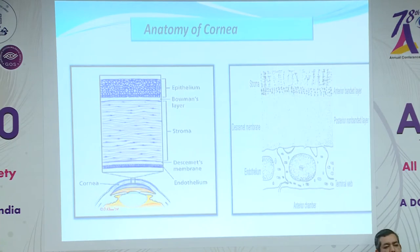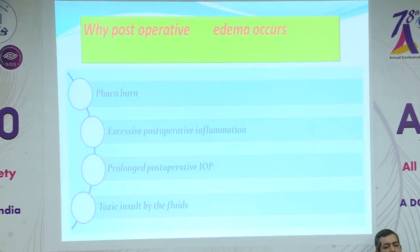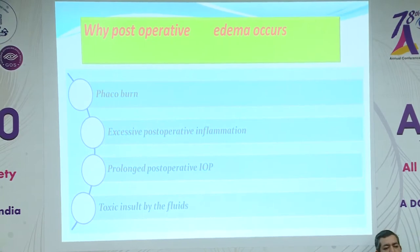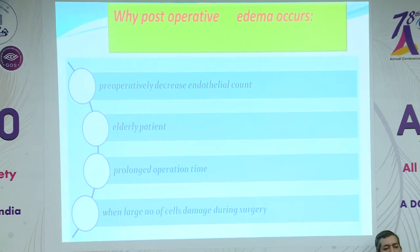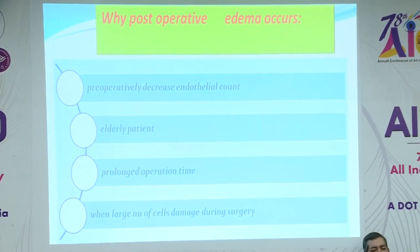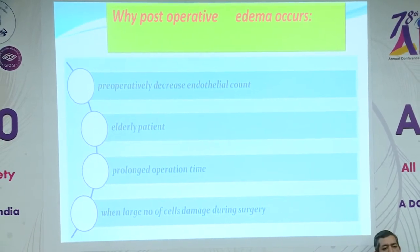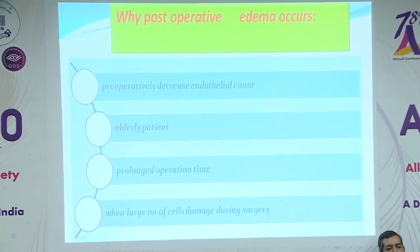This is the anatomy of the cornea. Why does postoperative edema occur? Causes include excessive postoperative inflammation, prolonged postoperative intraocular pressure elevation, toxic insult by the fluids, preoperative decreased endothelial cell count, elderly patients, and prolonged operation time when a large number of cells are damaged during surgery.